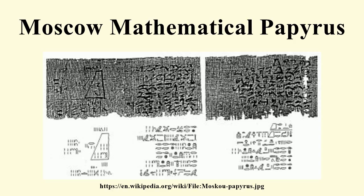"You get 1. Calculate the remainder which is 8. Calculate 1 ninth of 8. You get 2 thirds plus 1 sixth plus 1 eighteenth. Find the remainder of this 8 after subtracting 2 thirds plus 1 sixth plus 1 eighteenth. You get 7 plus 1 ninth. Multiply 7 plus 1 ninth by 4 plus 1 half. You get 32. Behold this is its area. You have found it correctly."